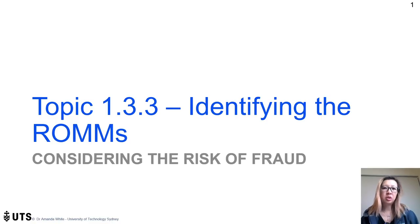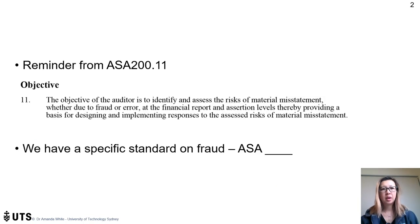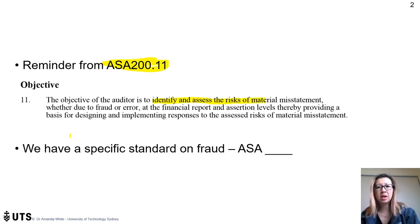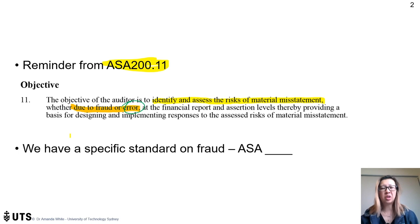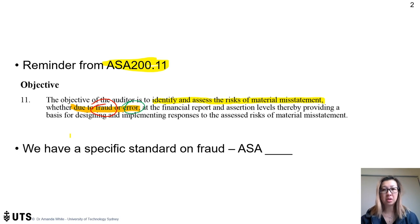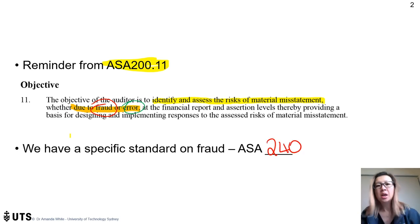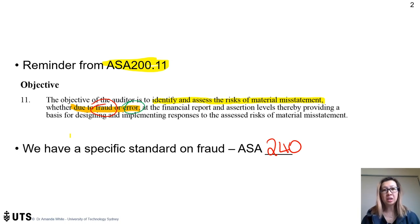This section looks at identifying risks of material misstatement from the perspective of fraud. ASA 200 reminds us that our audit objective includes identifying and assessing risks of material misstatement whether due to fraud or error. Error is an unintentional mistake, but we also need to look at intentional misstatements — that's what fraud covers. The specific standard for this is ASA 240, which we use to analyze risks from the fraud and intentional perspective.